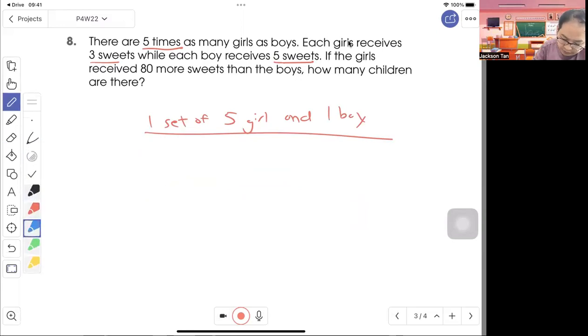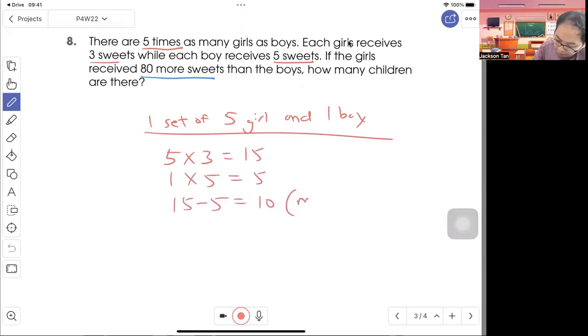You see that the girls received 80 more sweets, so let's try again. So 5 girls will have 5 times 3, 15 sweets. One boy will have 5. So 15 minus 5, so one set will have 10 more sweets than the boy.